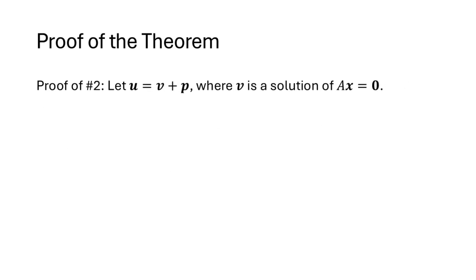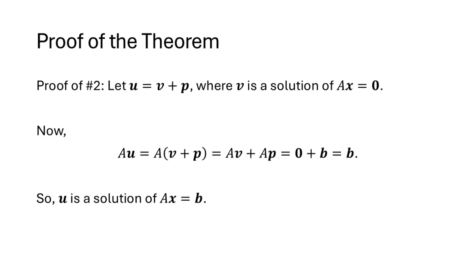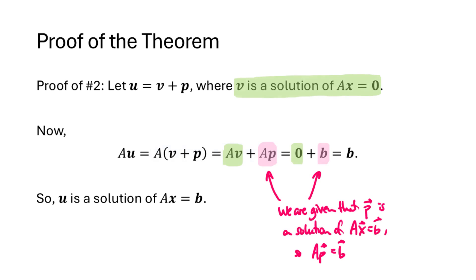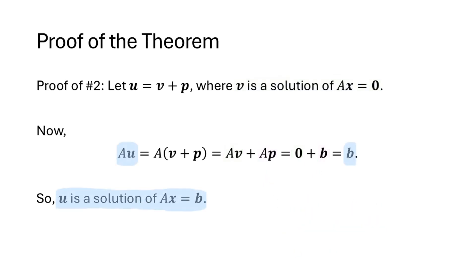Going the other direction, we're given that u has the form v plus p, where v is a solution of Ax equals 0, and our goal is to show that u is a solution of Ax equals b. We compute Au: substituting u equals v plus p and using the distributive rule gives Au equals Av plus Ap. We know Av equals 0 because v is a solution of Ax equals 0, and Ap equals b. So Au equals 0 plus b equals b, which shows that u is a solution of Ax equals b.